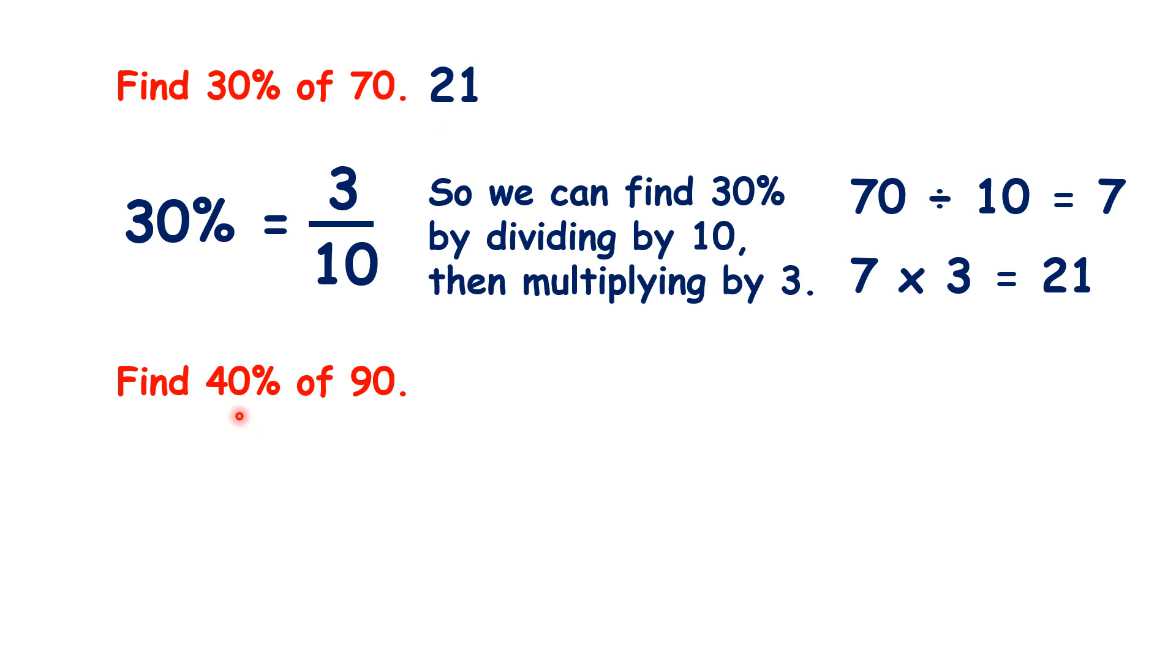And here, 40% is 4 tenths, so we divide by 10, multiply by 4, so 40% of 90 is 36.